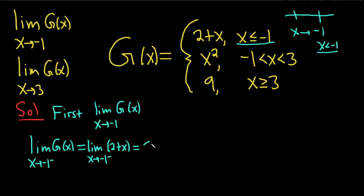So plug it in, drop the limit sign, so 2 plus x, plus negative 1, and that's equal to the number 1. Boom, there it is. So that's the limit as x approaches negative 1 from the left.